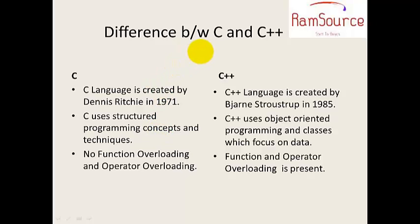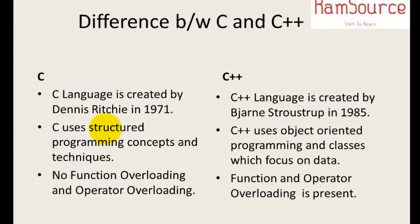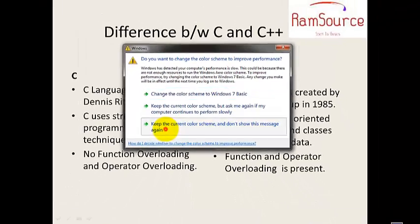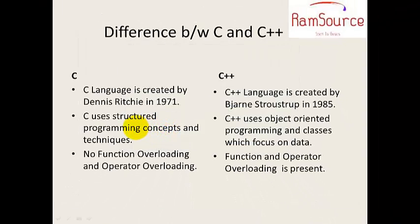First, the difference between C and C++. C was created by Dennis Ritchie in 1971, whereas C++ was created by Bjarne Stroustrup in 1985. C uses structured programming concepts and techniques, whereas C++ is an object-oriented programming language. However, C++ is not purely object-oriented — it is partially object-oriented.